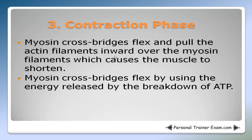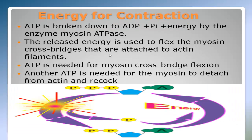That leads us to the third phase of the sliding filament theory — the contraction phase. In the contraction phase, myosin cross bridges flex and pull the actin filaments inward over the myosin filaments, which causes the muscle to shorten. Myosin cross bridges flex by using the energy released by the breakdown or hydrolysis of ATP (adenosine triphosphate) by the enzyme myosin ATPase.